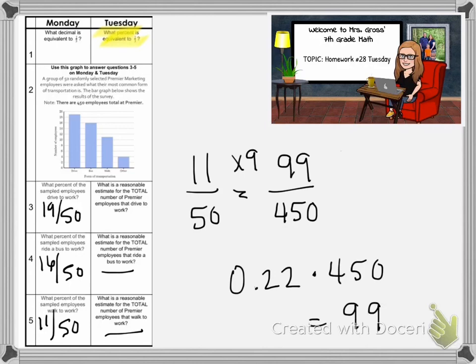The answers are: number one is 33.3 repeating percent, number three is 171, number four is 144, and number five is 99.